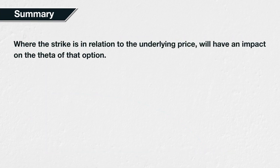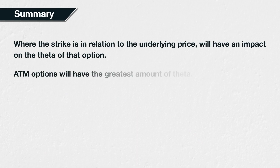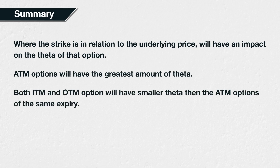In summary, where the strike price of an option is in relation to the underlying price will have an impact on the theta of that option. At-the-money options have the most extrinsic value to lose and so will have the greatest amount of theta — that is, they will lose the most value over the next 24 hours, assuming all else remains stable. As we move away from the current underlying price in either direction, both in-the-money and out-of-the-money options will have smaller theta than the at-the-money options of the same expiry.